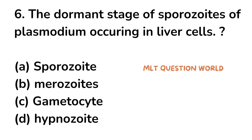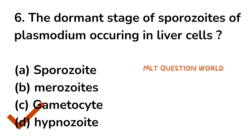Question number 6. The dormant stage of Sporozoites of Plasmodium occurring in liver cells: option A. Sporozoite, option B. Merozoite, option C. Gametocyte, option D. Hypnozoite. The right answer is option D, Hypnozoite. Hypnozoite is the dormant stage of Sporozoites of Plasmodium occurring in liver cells.